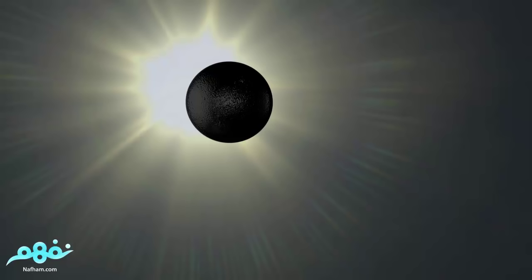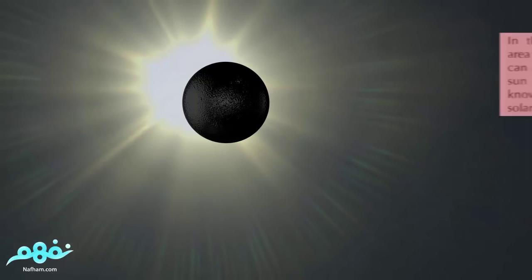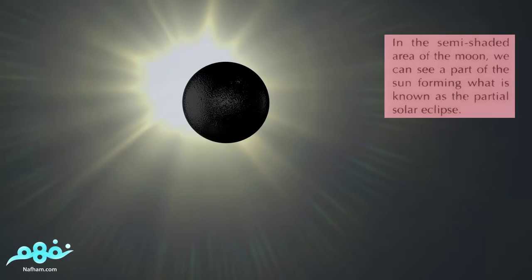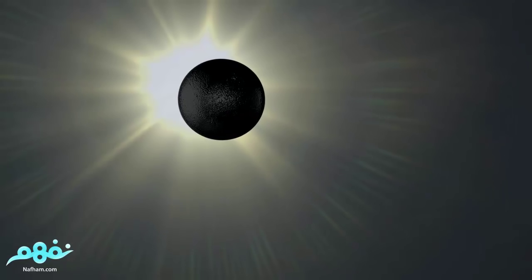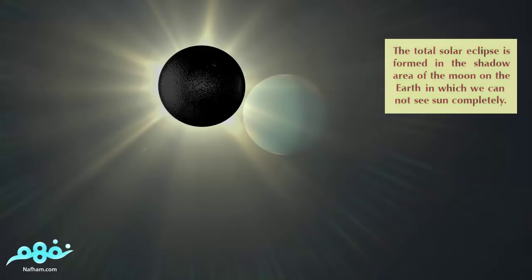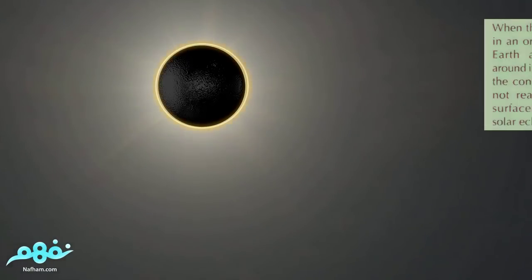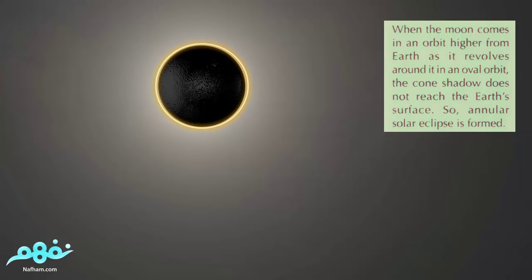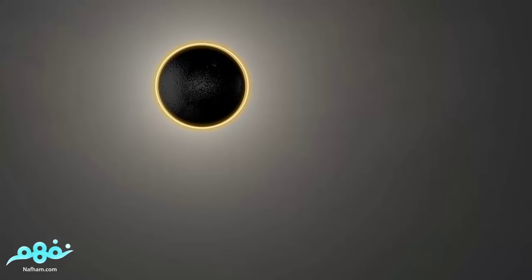We can observe more than one type of solar eclipse, as shown in this video. In the semi-shaded area of the moon we can see part of the sun, forming what is known as the partial solar eclipse. The total solar eclipse is formed in the shadow area of the moon on the earth, in which we cannot see the sun completely. However, when the moon is in a higher orbit from the earth — as it revolves in an oval orbit — the cone shadow doesn't reach the earth's surface, so an annular solar eclipse is formed.